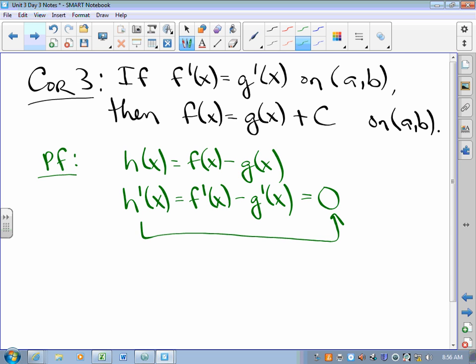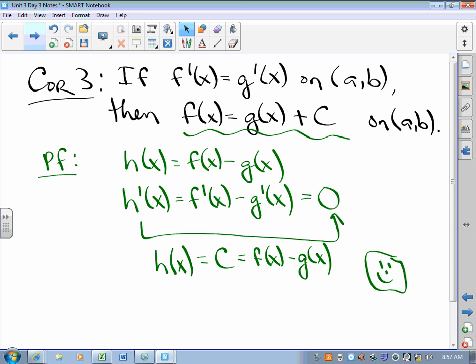Wait a second. H is a continuous differentiable function. It satisfies the mean value theorem, and its derivative is zero. By corollary 2, that means that H of X is a constant, which means that F of X minus G of X is a constant, which is exactly what we wanted to show. And so three very big results for us all flow from the mean value theorem.